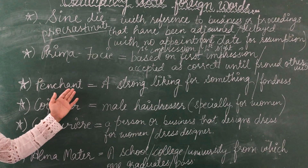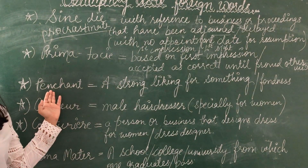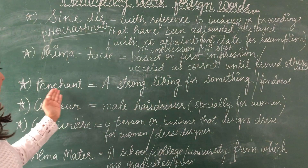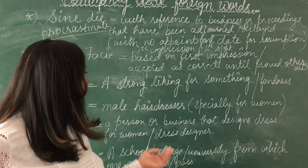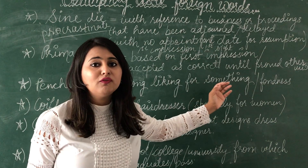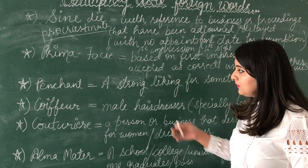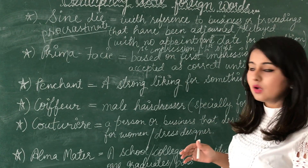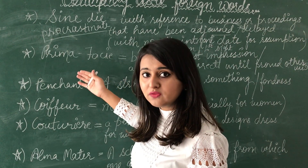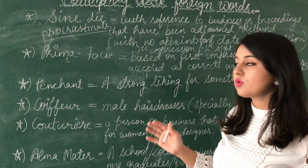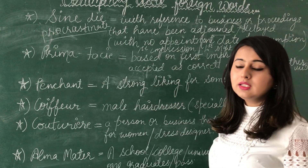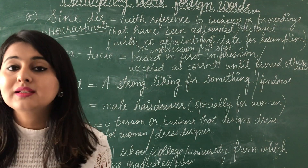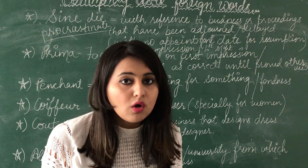The next word is 'penchant', spelled P-E-N-C-H-A-N-T. We pronounce it like 'penchant' — not 'penchant'. Penchant means a strong liking or fondness for something. For example: Ram saw a girl and fell in love with her prima facie and has now developed a strong penchant for her. Another example: he has a penchant for adopting stray dogs — a strong liking for adopting stray dogs.